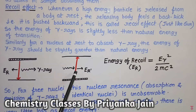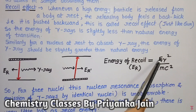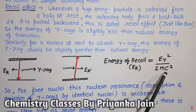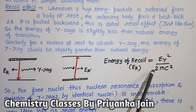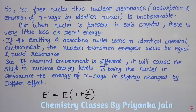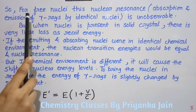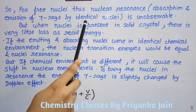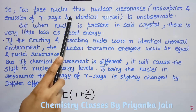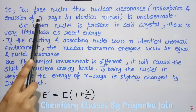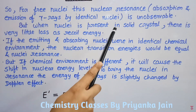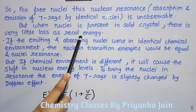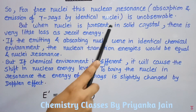If the emitting and absorbing nuclei are in identical chemical environments, the nuclear transition energies would be equal and they resonate. But if the chemical environment is different, it causes a shift in nuclear energy levels, so they cannot resonate. To bring the nuclei into resonance, the energy of the gamma rays is shifted slightly using the Doppler effect — the source is vibrated with a certain velocity, causing the gamma ray energy to fluctuate. At a certain velocity, the energy matches that required by the absorber. The Doppler-shifted energy: E' = E(1 + v/c), where v is in mm/s.